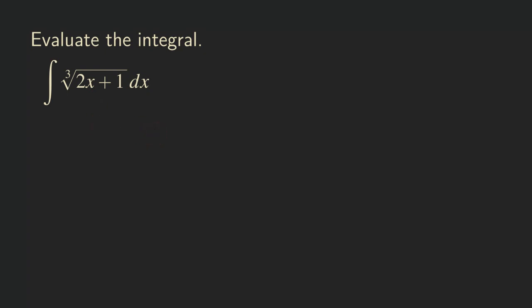So first, we are going to start by rewriting the function as 2x plus 1, raised to the 1 over 3 power. So now, because this is in the form of a power function, we can use the general power rule. We can try to reverse the power rule that we have for differentiation.